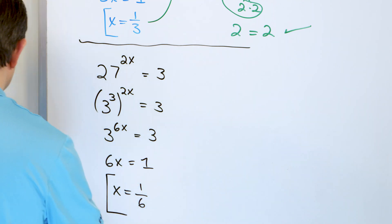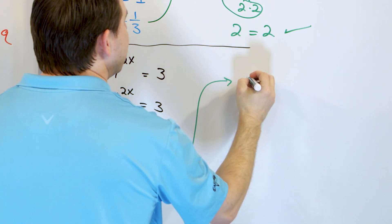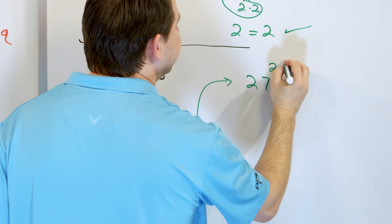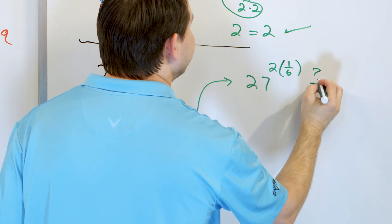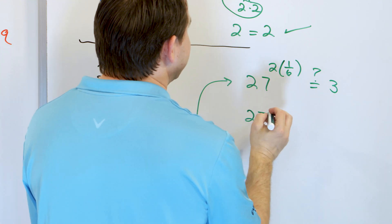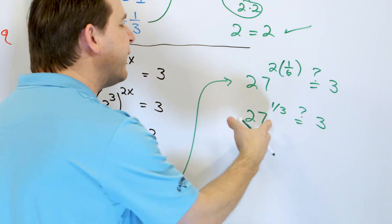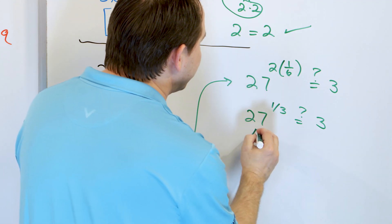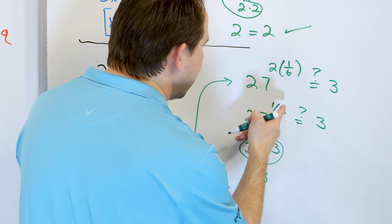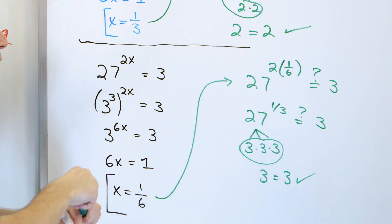We have an exponent raised to an exponent, so it becomes three to the power of six x equals three to the first. Now the bases are the same, so 6x must equal one. Therefore x equals one-sixth. To check: 27 to the power of two times one-sixth equals 27 to the one-third power. Two over six simplifies to one-third, which is a cube root. The cube root of 27 is three, so three equals three. Check.